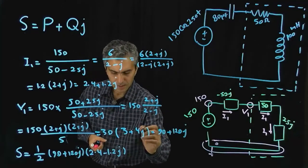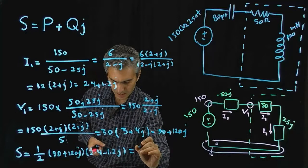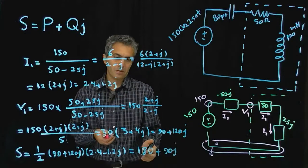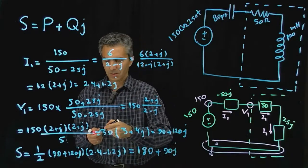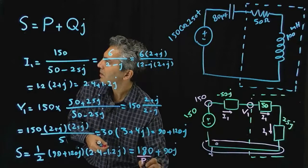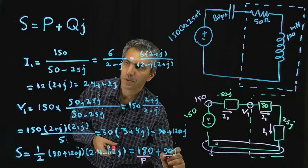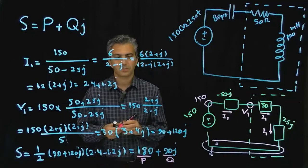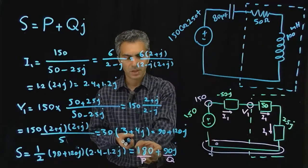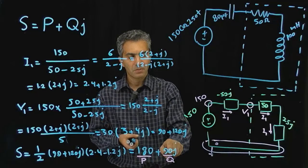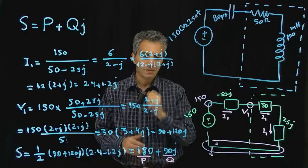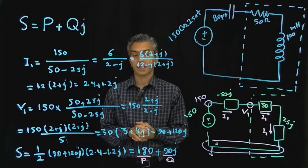Calculating that, it turns out to be 180 plus 90j. So the average power P is 180 watts — this is the real power being consumed by the resistor. And the reactive power Q is 90 VAR — this is the power conserved by the inductor in the form of a magnetic field.